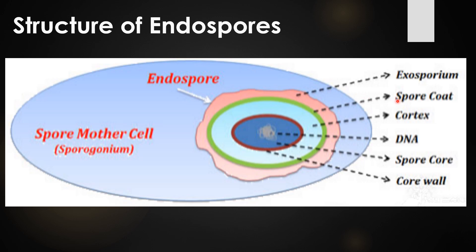The spore coat contains several layers of proteins, and the spore coat is comparatively thick. The thickness of the spore coat is the major reason for the higher resistance of endospores towards heat, radiation, and chemicals. Inner to the spore coat, the region is the cortex.